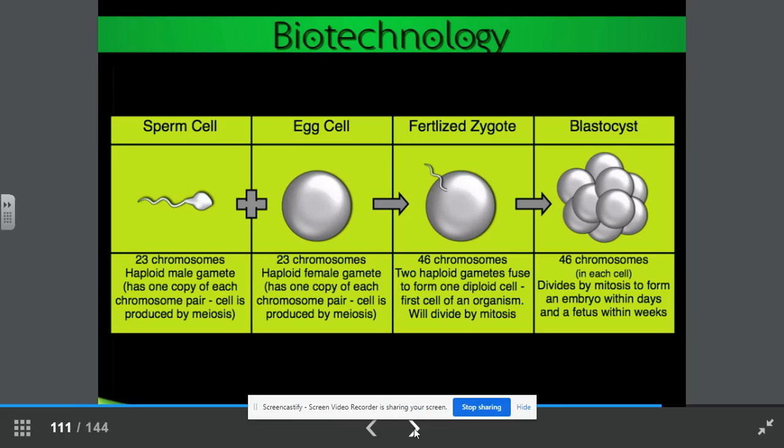Here we have our sperm cell, 23 chromosomes. The haploid male gamete has one copy of each chromosome pair. The cell is produced by meiosis. It joins up with the egg cell. It has 23 chromosomes. The haploid female gamete has one copy of each chromosome pair. The cell is produced by meiosis. The fertilized zygote. We have 46 chromosomes. Two haploid gametes fused to form one diploid cell, the first cell of an organism. This will divide by mitosis. And then finally, we have the blastocyst. This is 46 chromosomes in each cell, divides by mitosis to form an embryo within days, and a fetus within weeks.